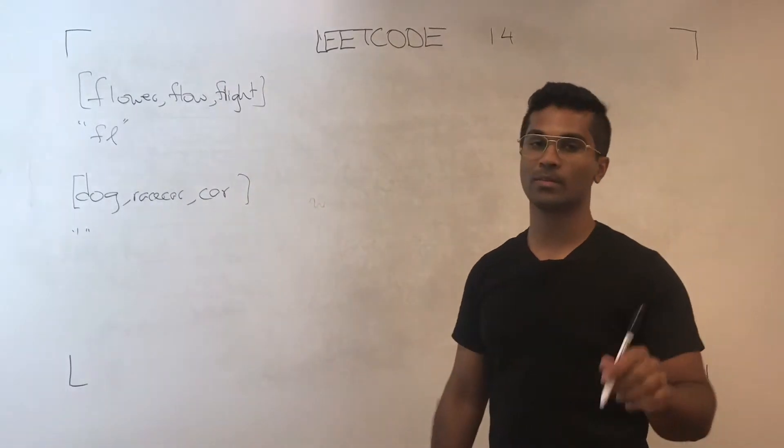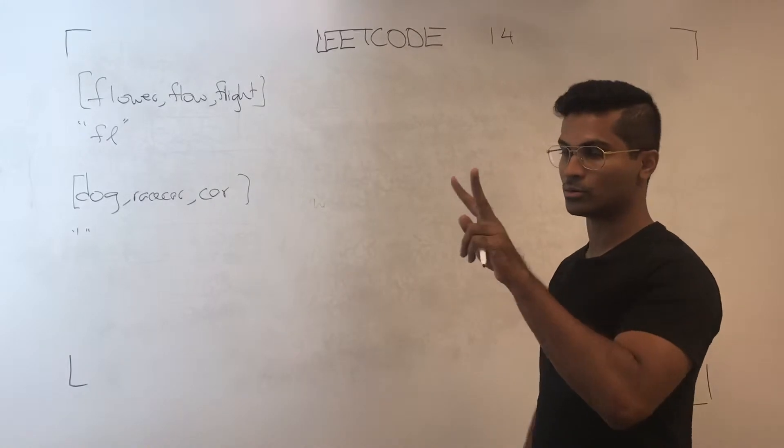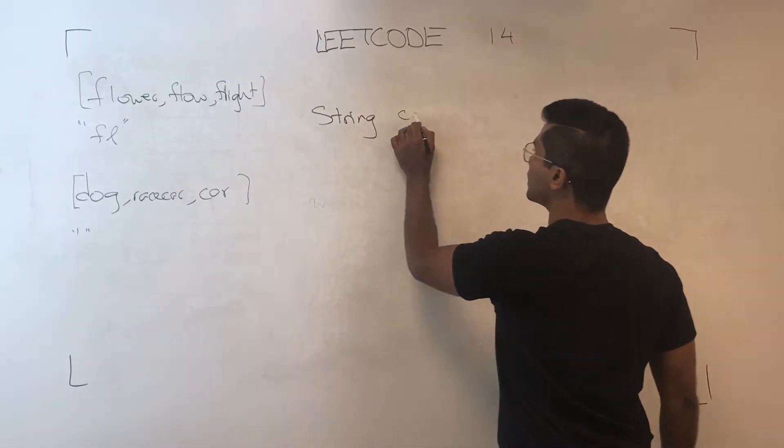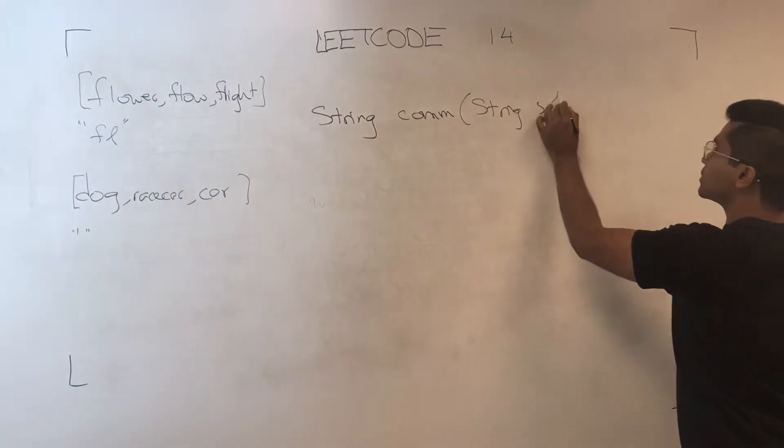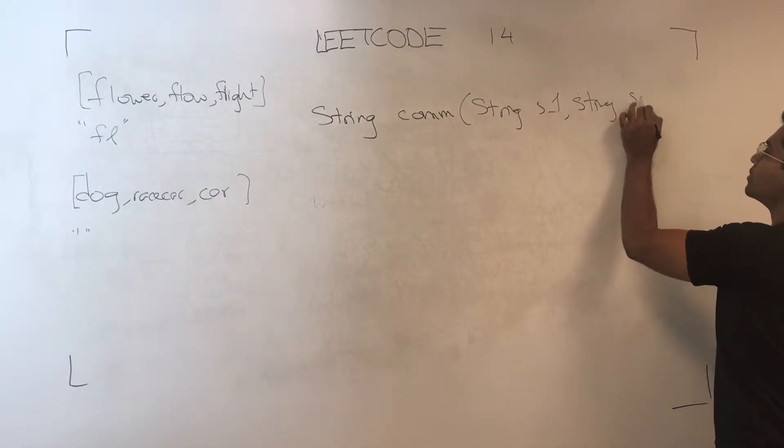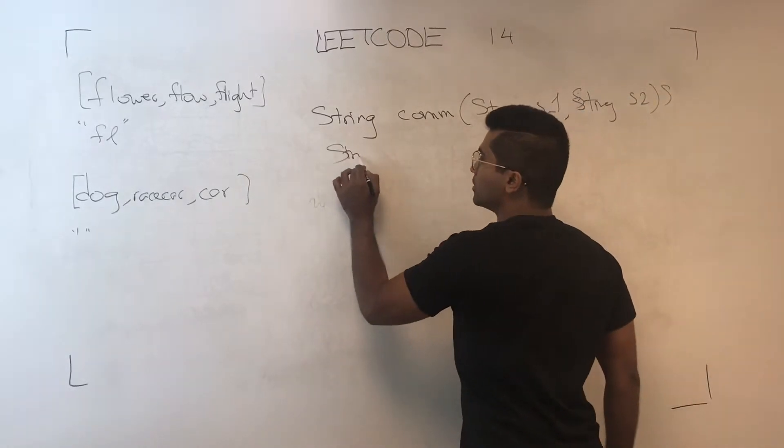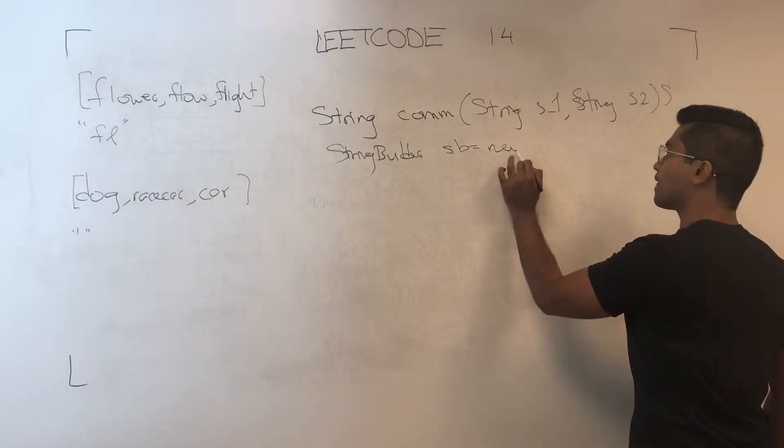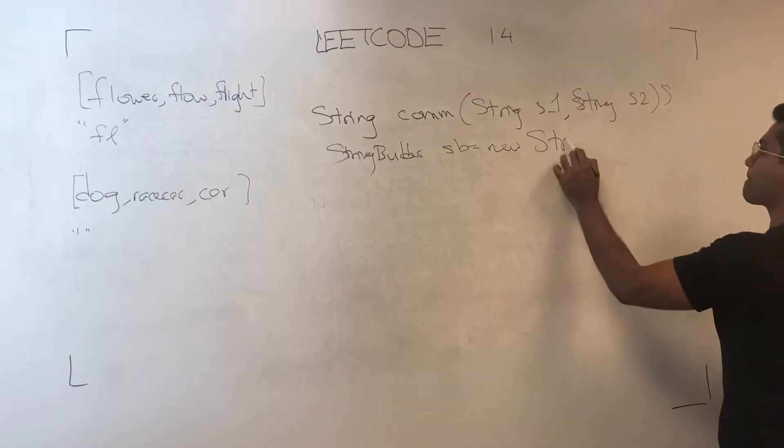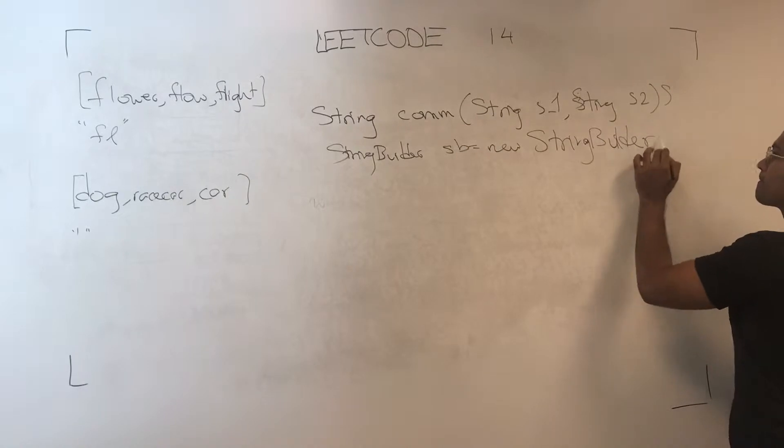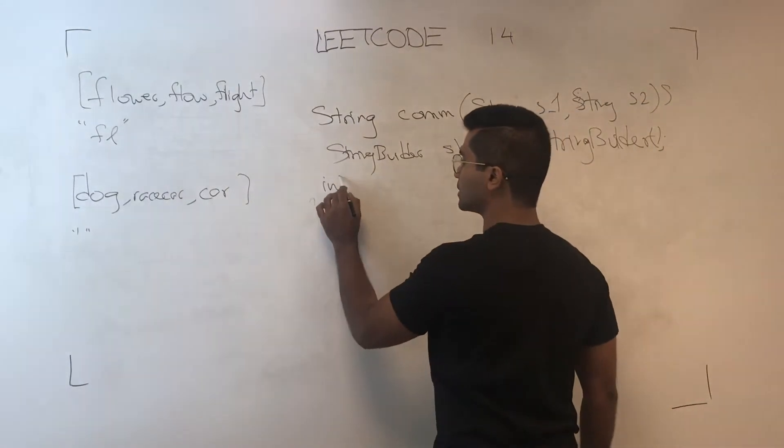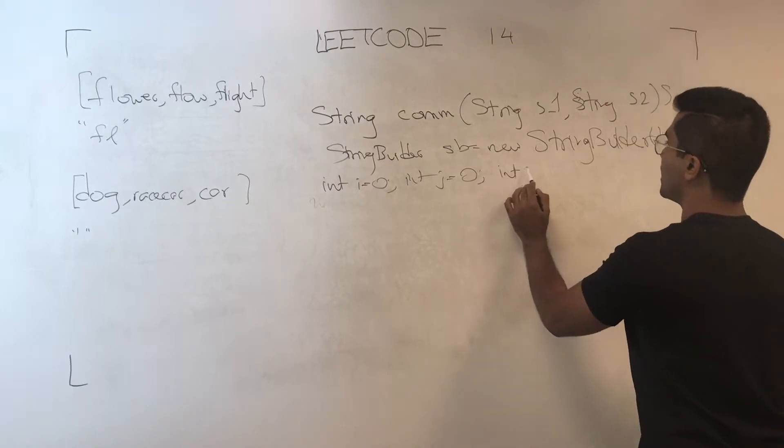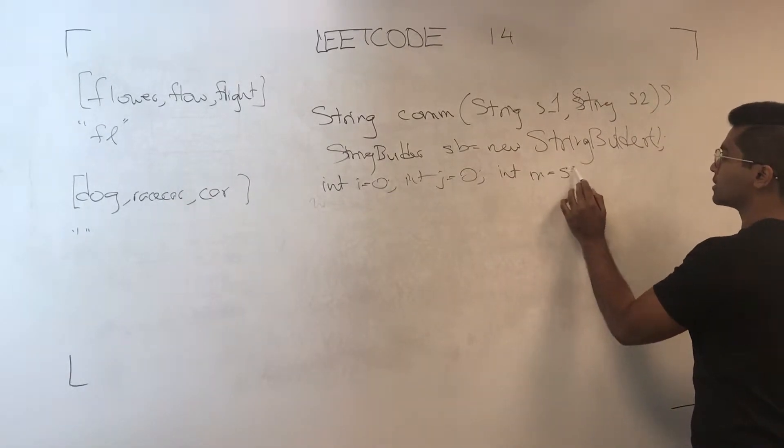So let's write the method first to give us a common string, common prefix, given two strings. String common, string s1, string s2. We use a StringBuilder because in Java strings are immutable. We'll have two pointers, int i equals 0, int j equals 0, int m equals s1.length.